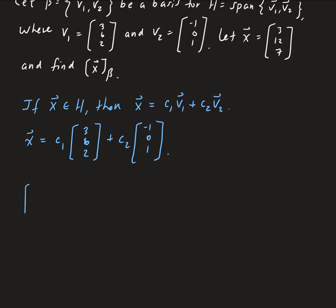So this is going to be equal to, X is given as [3, 12, 7], and that's equal to C₁[3, 6, 2] plus C₂[-1, 0, 1].